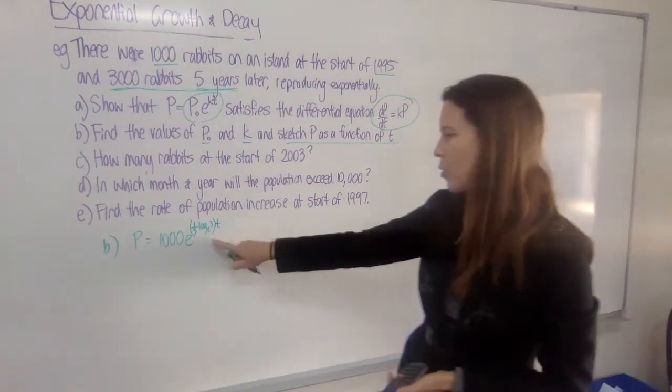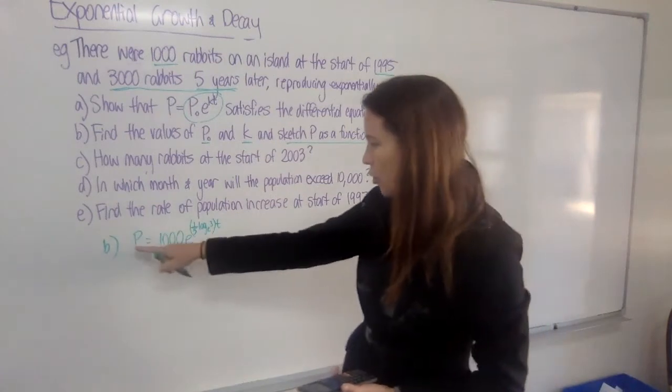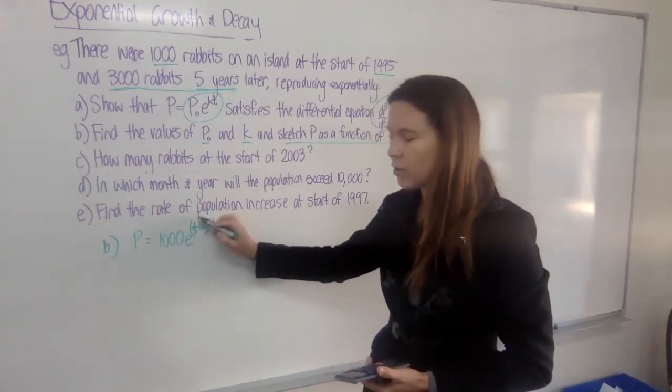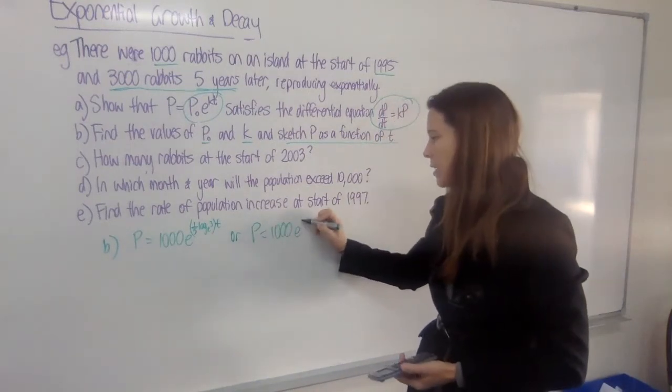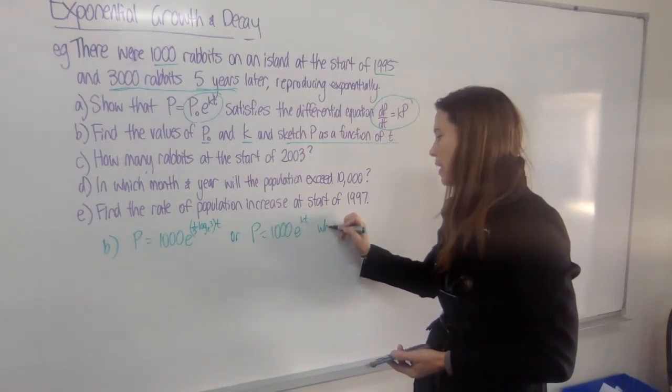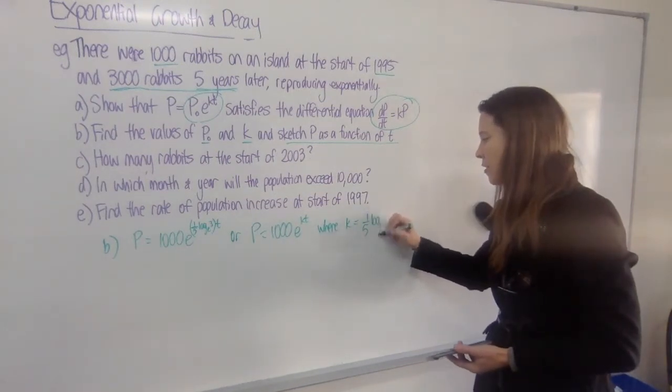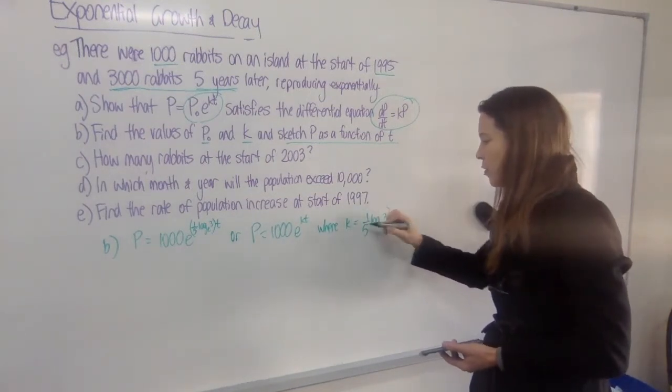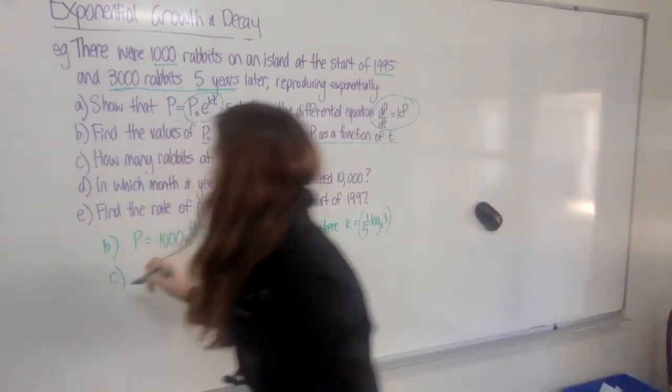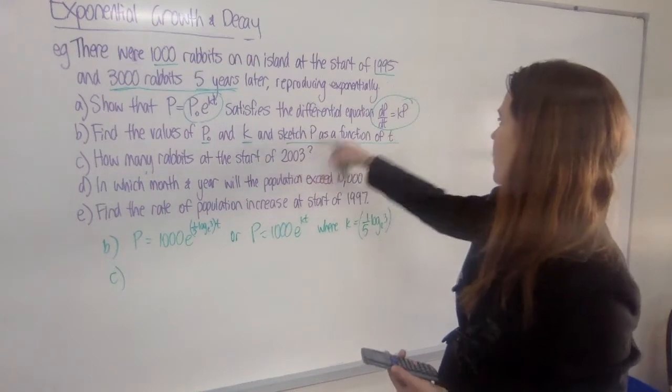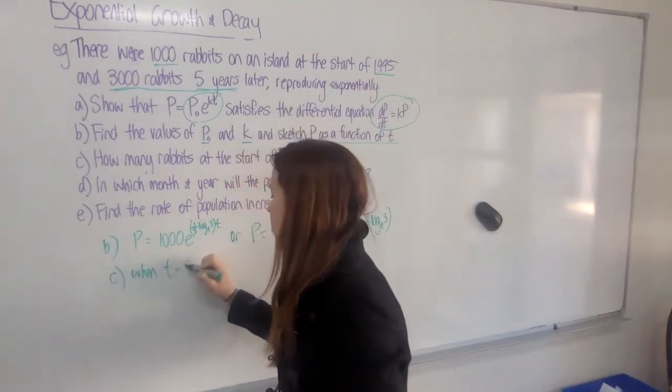Now I'm going to leave my equation for the population up there so that I can use it for later parts. You could write it like this where you've put your value for k in, or you could write P equals 1,000e^(kt), where k equals, and then write the messy expression that you've got there down. Now remember, we've already got that stored in our calculator. So for part C, we need to find how many rabbits there were eight years after the start. So in other words, when t equals 8, what was the population?